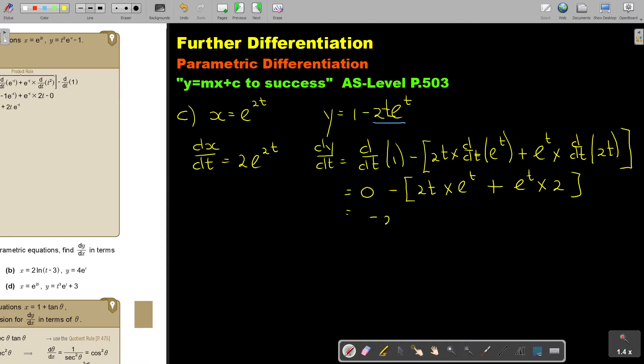So it's negative 2t, e to the power of t, minus 2, e to the power of t.